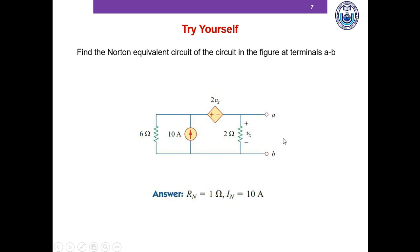To compute the Norton resistance we see that there is a dependent source, so we follow the exact same procedure used to determine the Thevenin resistance: we add a 1 volt voltage source or a 1 ampere current source at the terminal, determine the voltage across the current source or the current through the voltage source, and take the ratio to obtain the Norton resistance, which is 1 ohm.